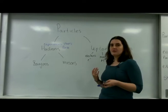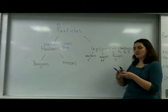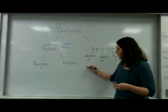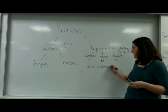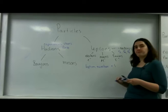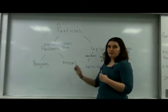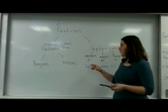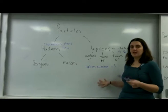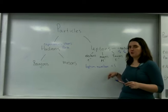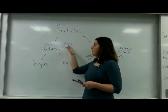Leptons in this form — E minus, mu minus, tau minus — have a lepton number of plus one. So when we use them in equations, much like charges of plus one and minus one, if you see an electron like this it has a lepton number of plus one. This will make a little bit more sense when we start to talk about conservation.